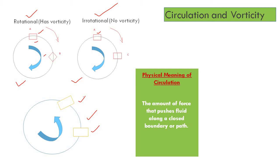Now, what is the physical meaning of circulation? So far we have seen it is a line integral of the tangential velocity component along the rotation contour — that is its mathematical representation. The physical meaning is that it is the amount of force that pushes fluid along a closed boundary or path. To have rotational motion, there must be a driving force; that force is circulation. It is a macroscopic concept that can be described over a particular area of flow.